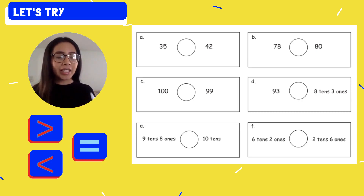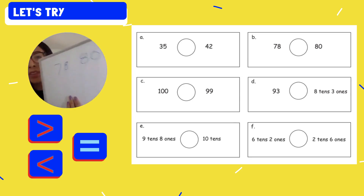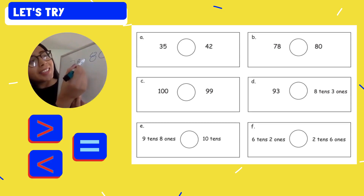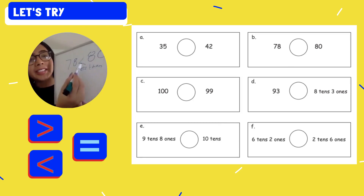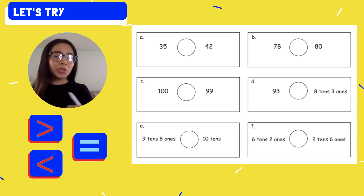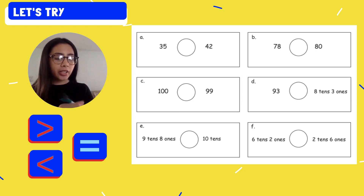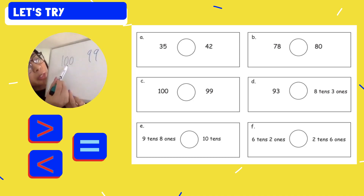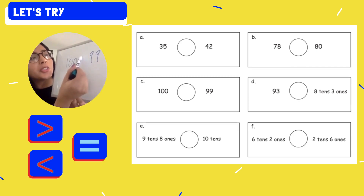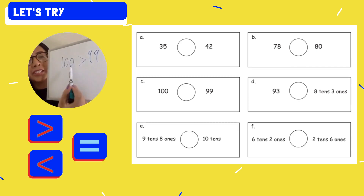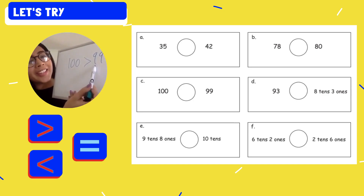It says 78 and 80. Think in your brain about which symbol you're going to use. Yes, it's the less than symbol again. 78 is less than 80. Let's do letter C — think in your brain what symbol for letter C. We're comparing a hundred to the number 99. Which one is greater? A hundred. So we're going to use our greater than symbol. A hundred is greater than 99.